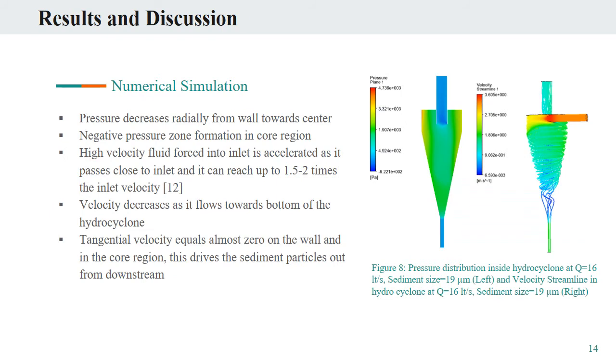From the results obtained from numerical simulation, pressure and velocity field distribution in the hydrocyclone agrees with literature from past researches. From Figure 8, we can see the pressure decreases radially from the wall towards the center, creating a negative pressure zone in the core outlet regions. This negative pressure is responsible for the flow through the overflow and underflow pipes. Since the hydrocyclone cannot accommodate the large flow rate through the underflow pipe, it is forced to escape through the overflow pipe. High-speed fluid enters the inlet and is accelerated up to 1.5 to 2 times the inlet velocity, then decreases as it moves towards the bottom of the hydrocyclone. The tangential velocity is zero on the wall and in the core region, and this drags the sediment particles from the downstream.